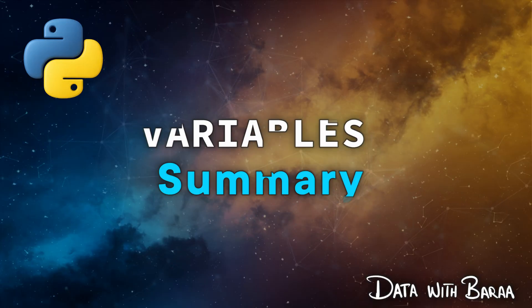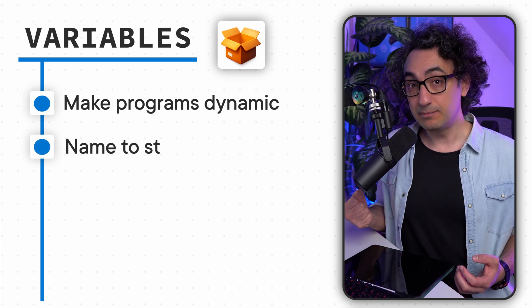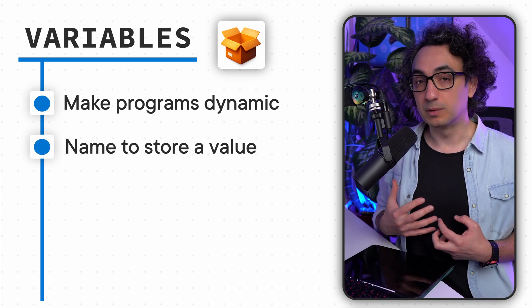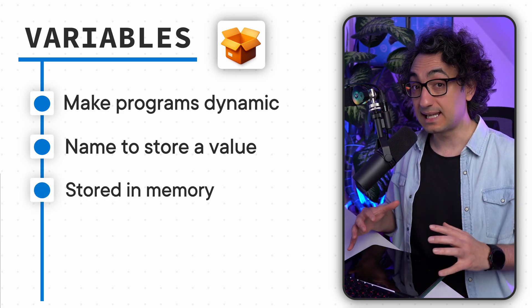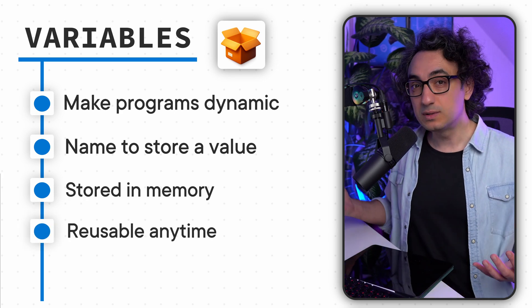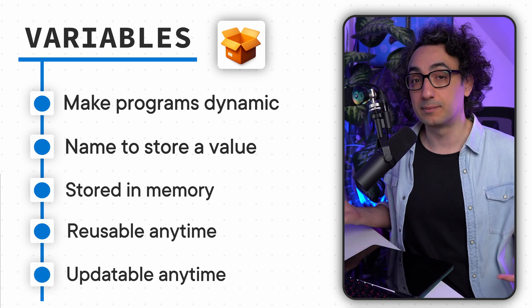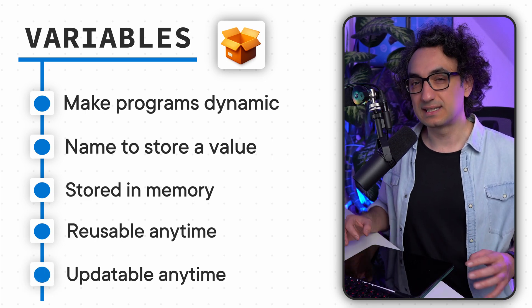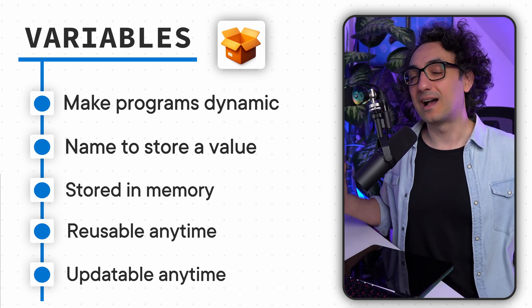Our code is completely dynamic and we have full control on the values — this is exactly the power that variables give us. Let's do a quick recap: variables are the foundation for making your code dynamic. We use them to create a name and store a value inside it using the equals operator. Python keeps those values in memory for quick access. Once you create a variable, you can reuse it wherever you want in your code, and during execution you can update its value. Variables appear in every real-world application, from simple scripts to advanced ones.